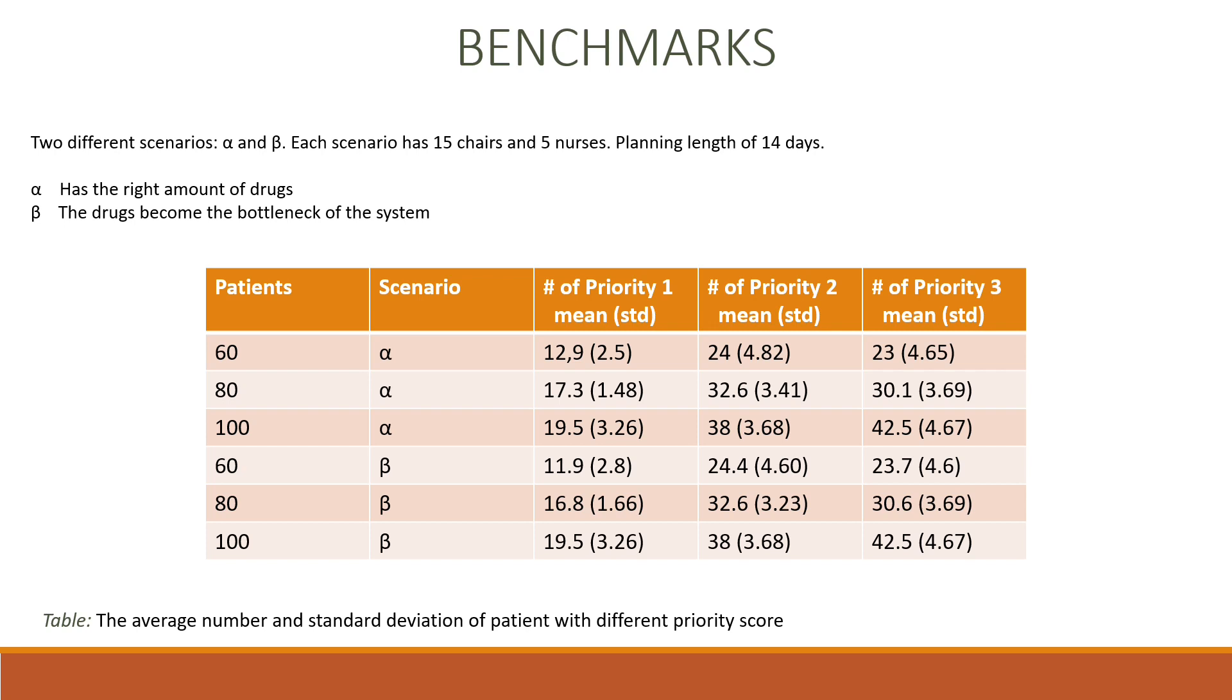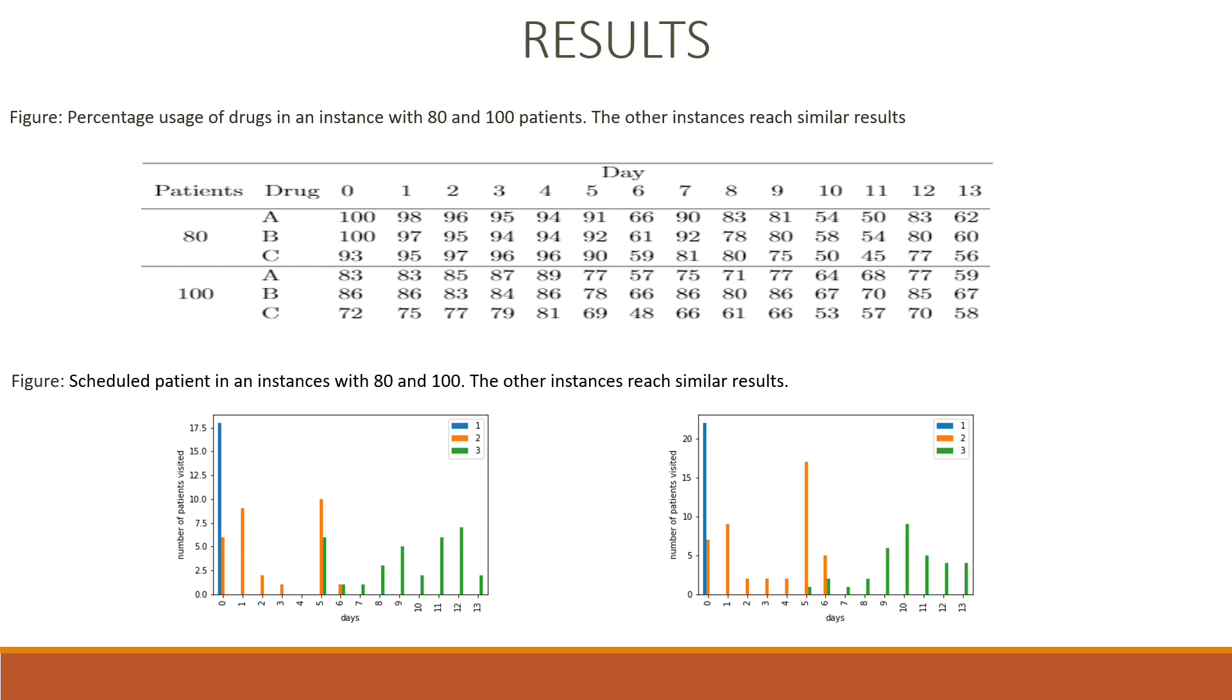To test our solution we generated some instances with random values, in particular we considered three different number of patients, 60, 80, and 100. And for each group we generated 10 instances. We evaluated these instances in two different scenarios, alpha and beta, and in scenario alpha we used the number of drugs that is coherent with the other parameters considered. In our case 15 chairs and 5 nurses, and the planning length of 14 days. While in the beta scenario we dropped off the amount of drugs available to test out our solution in an imbalanced situation.